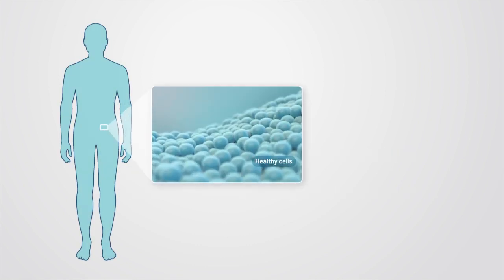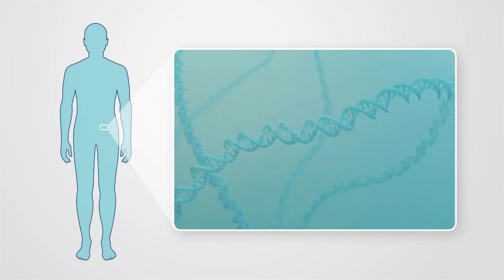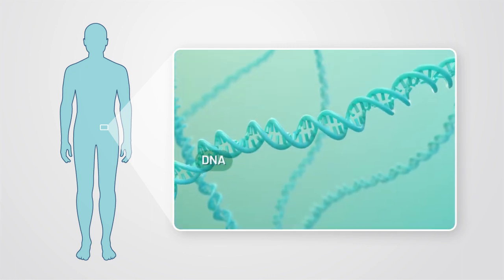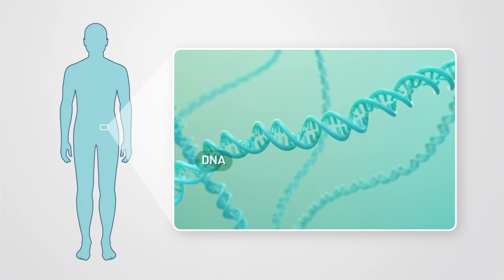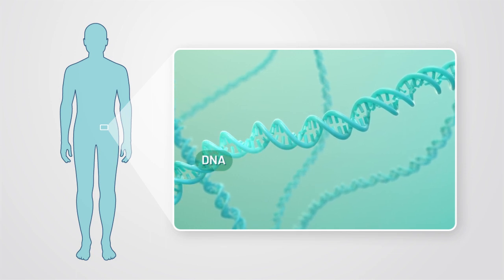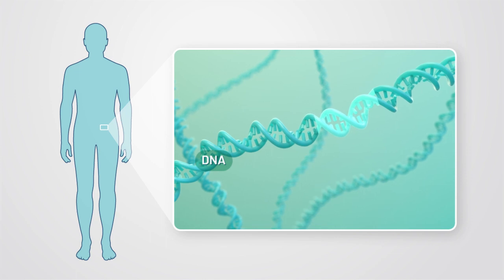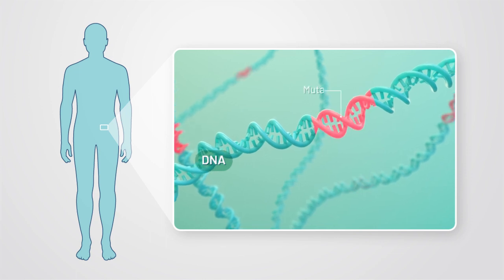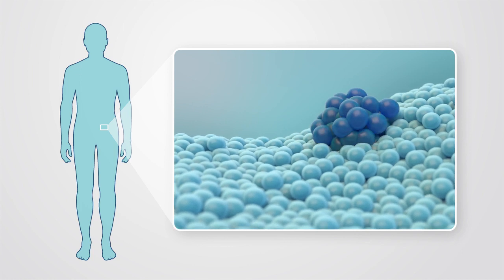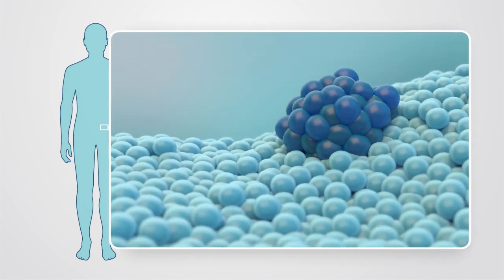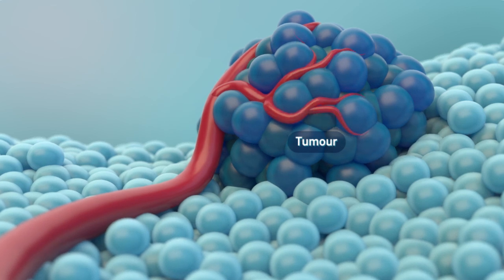Your body is made of billions of cells. Each cell in your body contains DNA, which tells the cell how to work. Genes are pieces of DNA, each with a specific role for the cell. Mutations can cause a cell to divide and grow uncontrollably, forming a tumor. The tumor that is formed may or may not be cancer.